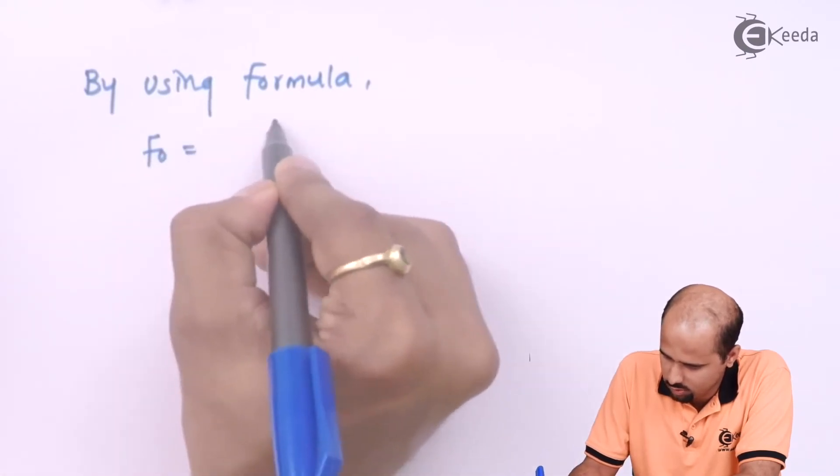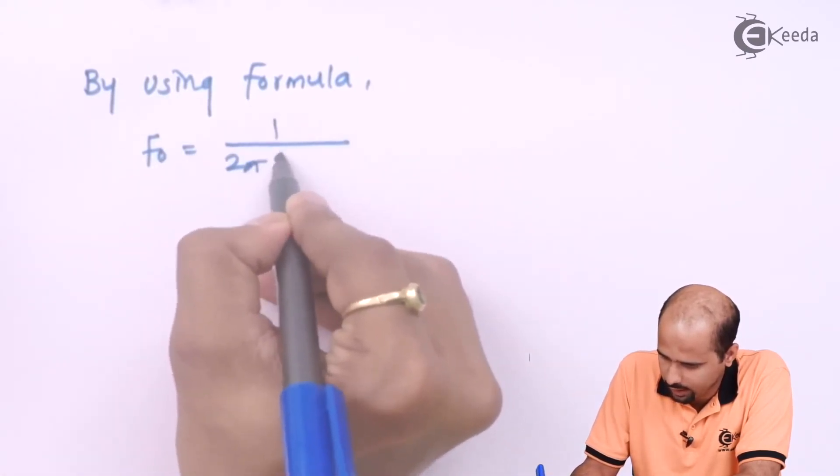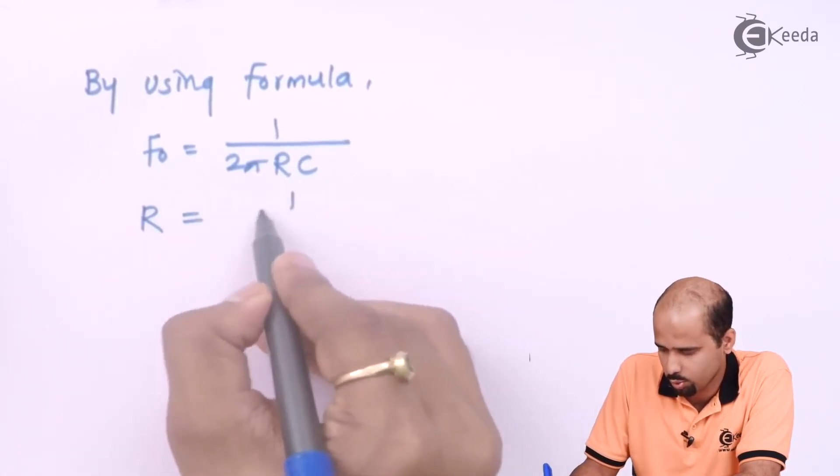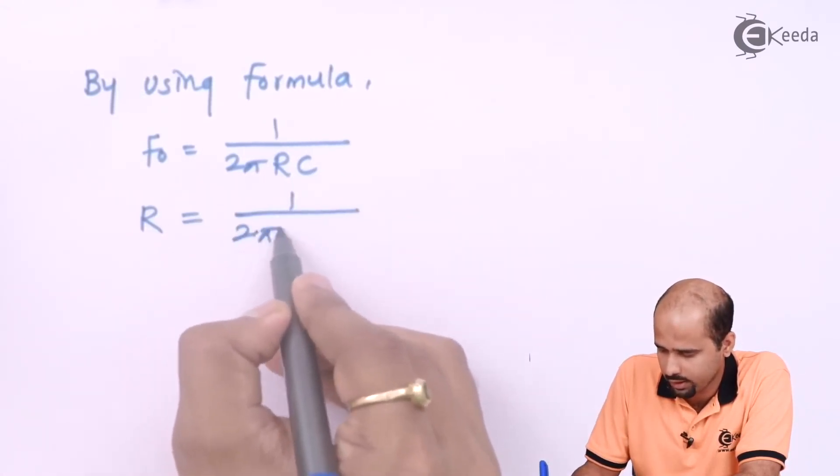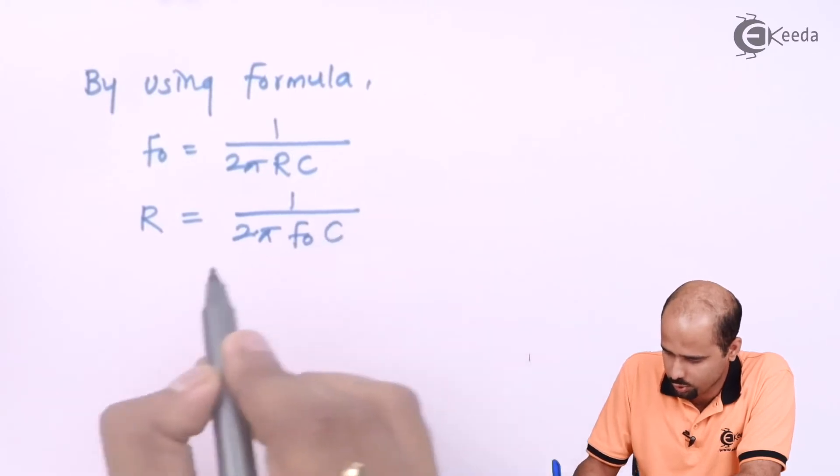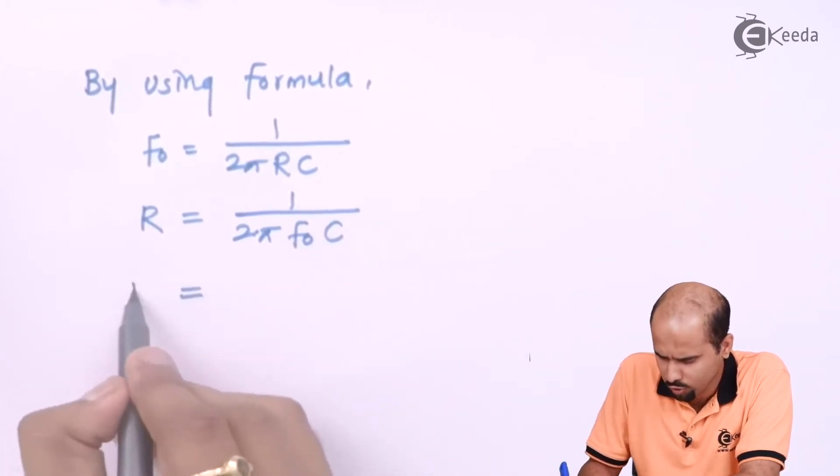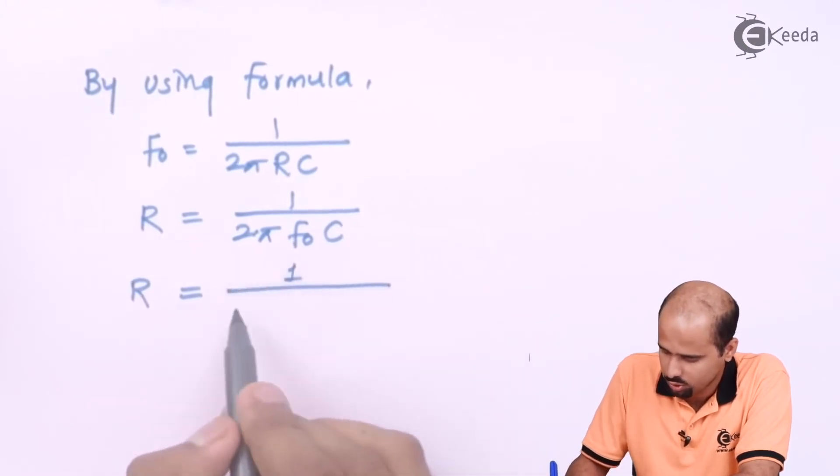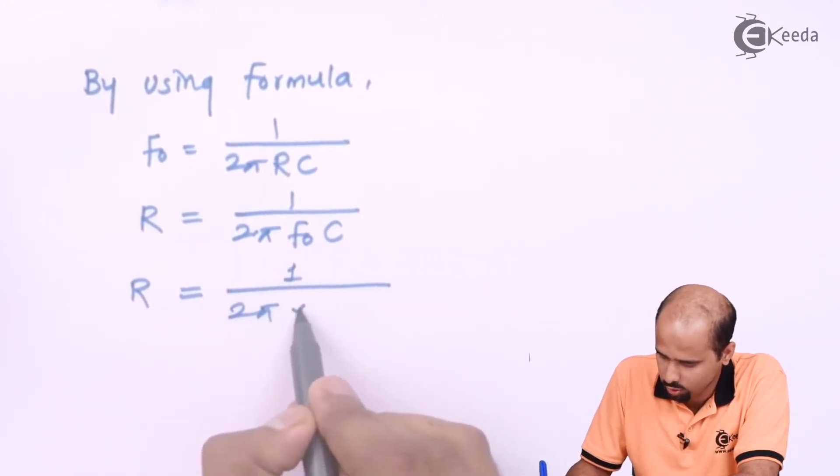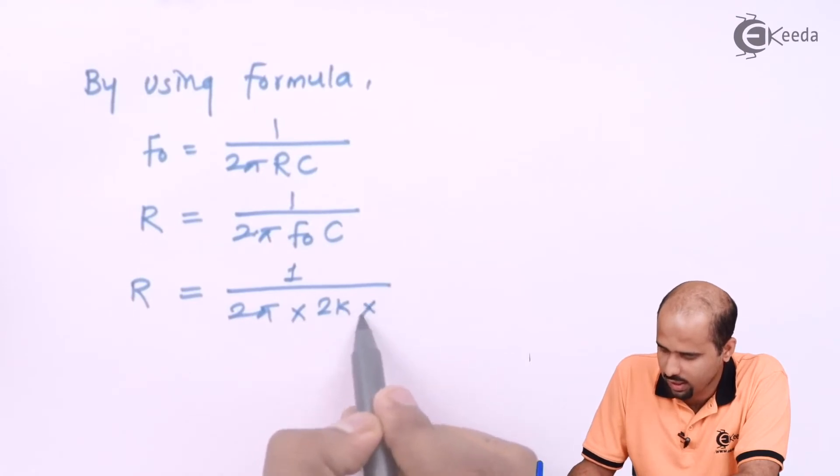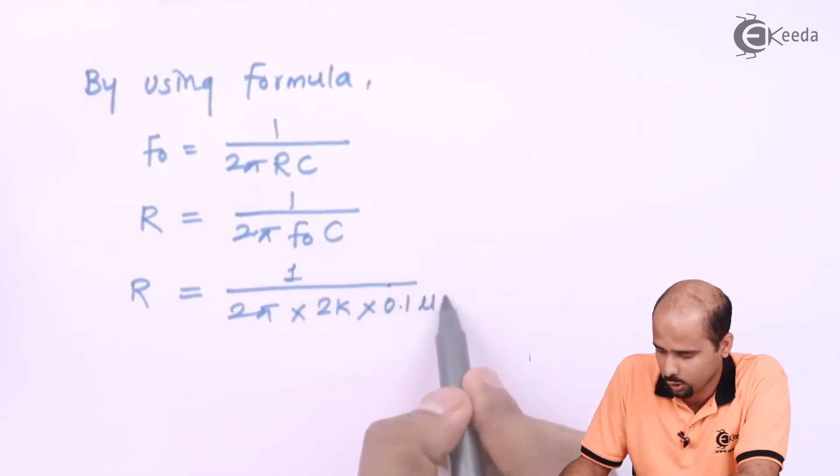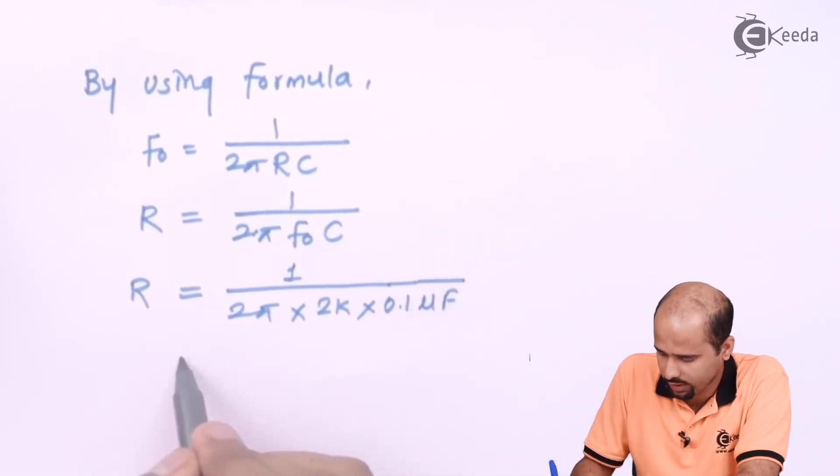F0 = 1/(2πRC). R = 1/(2πF0C). F0 is equal to 2K and the value of capacitor is 0.1 microfarad, so we can easily determine what will be the value of R.